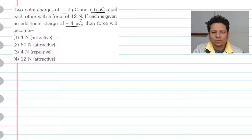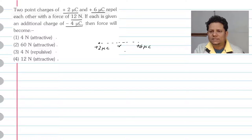then force will become: option A, 4 newton attractive; 60 newton attractive; 4 newton repulsive; 12 newton repulsive. So now this is our scenario - we have a charge of plus 2 micro coulomb at a certain distance r equal to plus 6 micro coulomb. Plus 2 and plus 6 micro coulomb charges are at distance r.